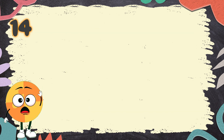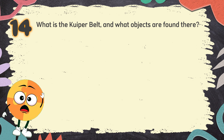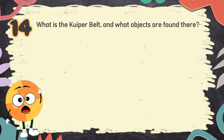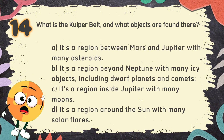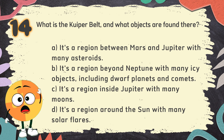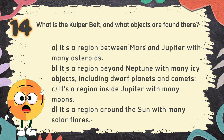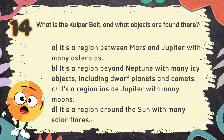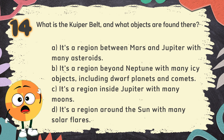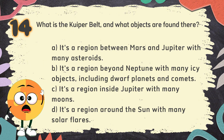Number 14. What is the Kuiper Belt and what objects are found there? The choices are: A. It's a region between Mars and Jupiter with many asteroids. B. It's a region beyond Neptune with many icy objects, including dwarf planets and comets. C. It's a region inside Jupiter with many moons. D. It's a region around the Sun with many solar flares.